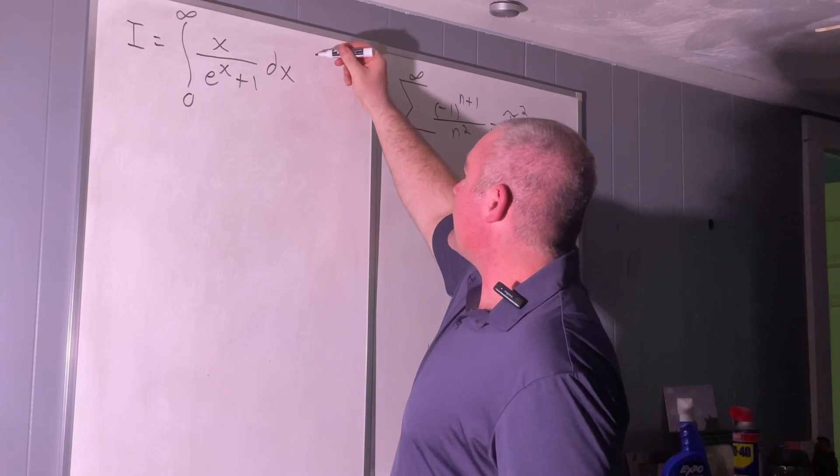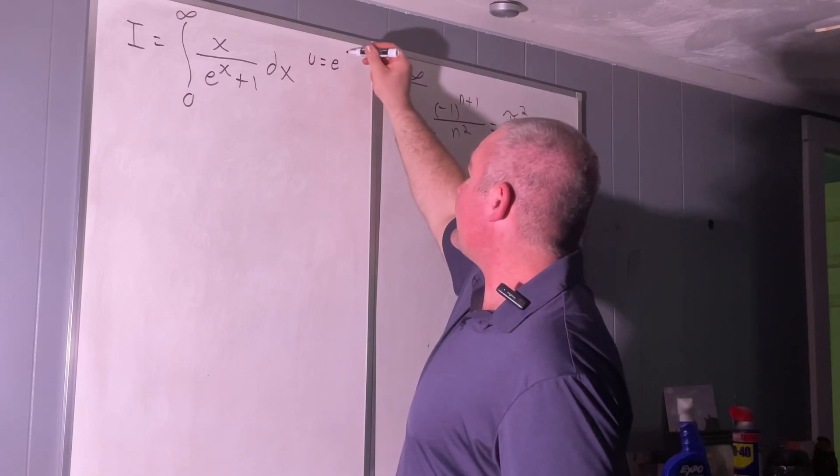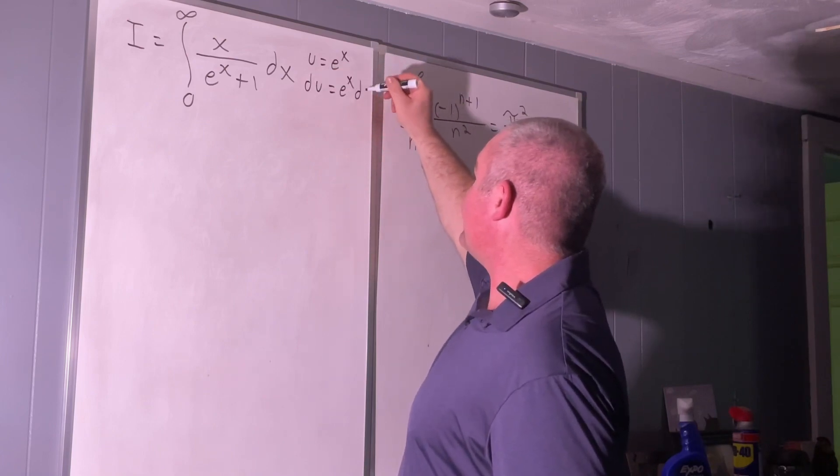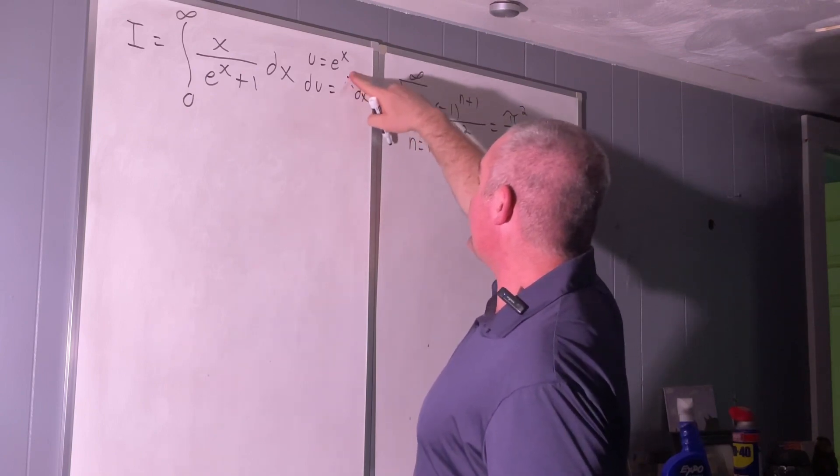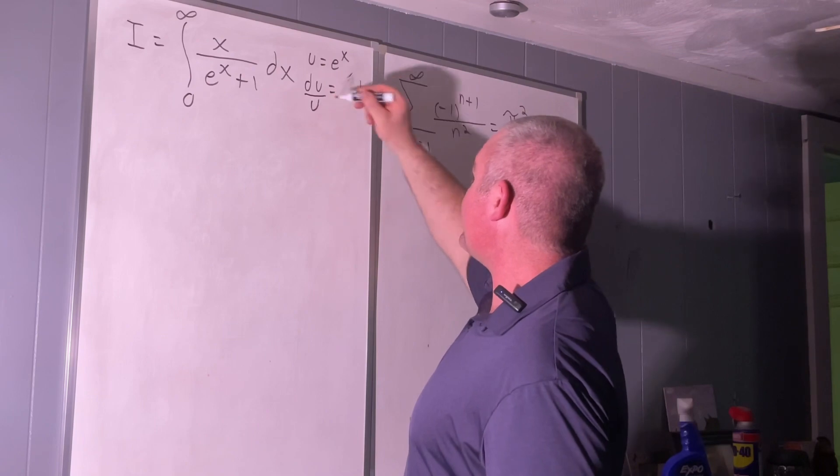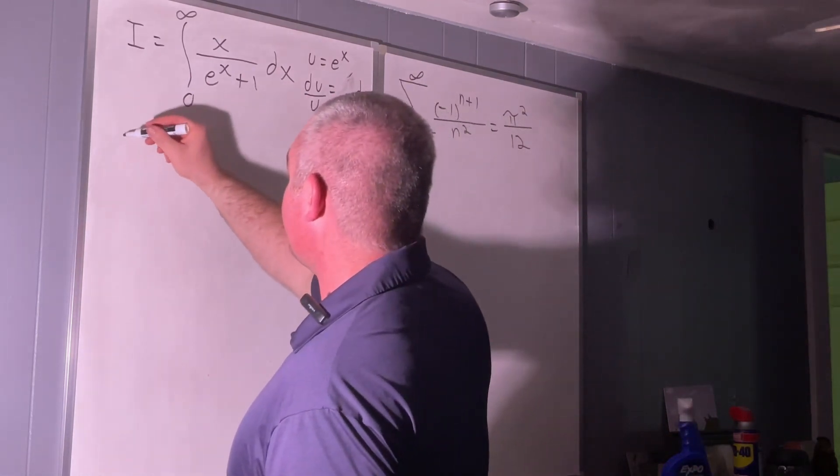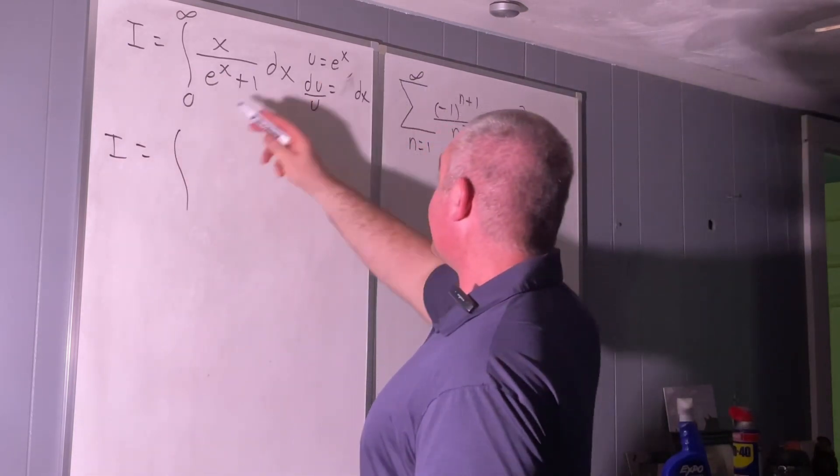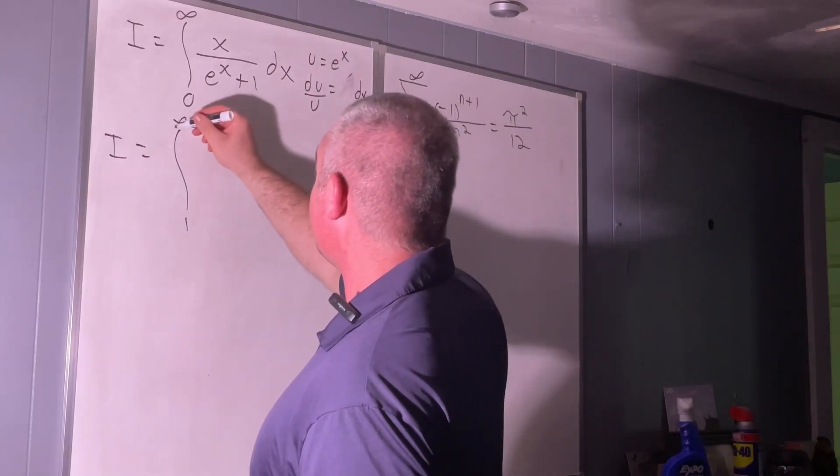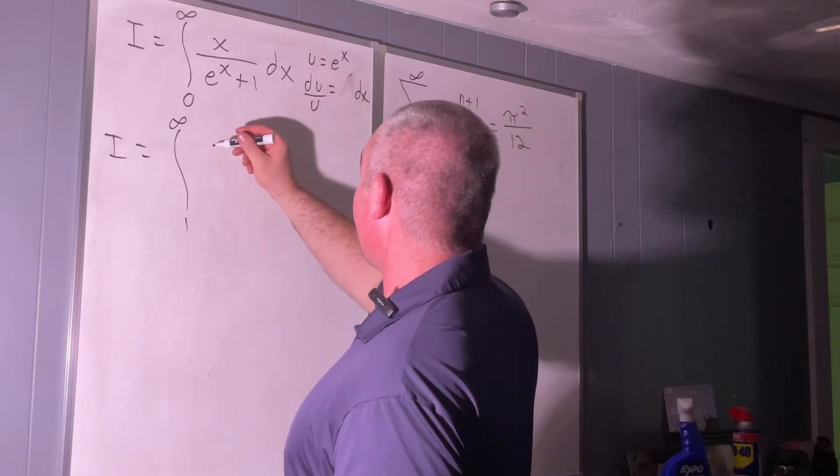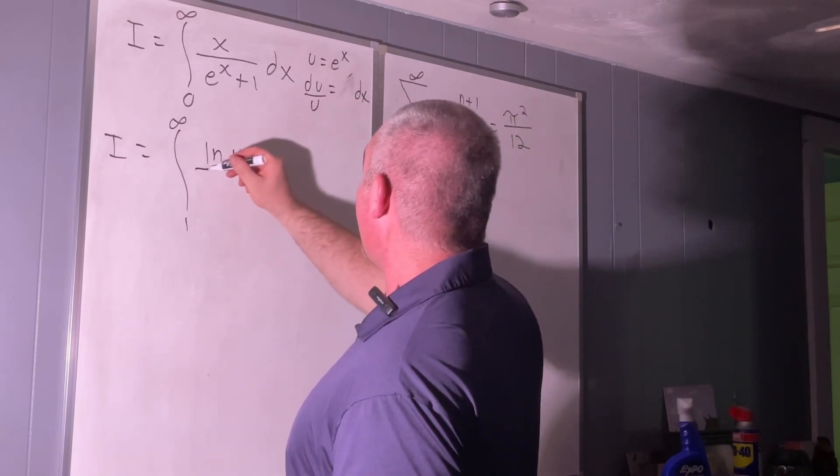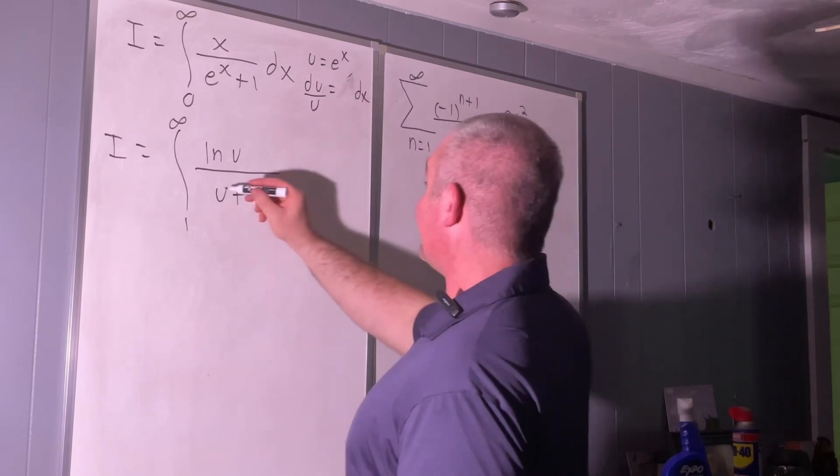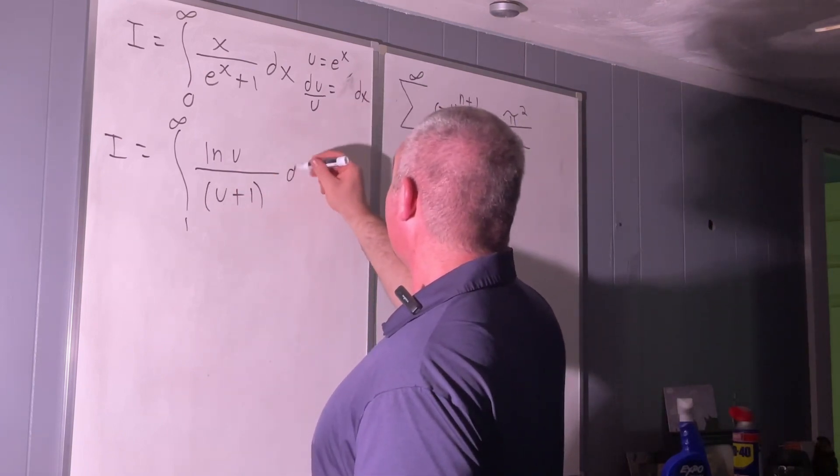The first substitution we're going to make is that u is equal to e to the x. Therefore, du is equal to e to the x dx, but e to the x is just u. So we'll just say that dx is equal to du over u. Alright, so that's going to give us I equals the integral from e to the zero is one, e to the infinity is infinity, our x would be natural log u over, let's see, e to the x is u. So that's just u plus one. And then our dx is du over u.